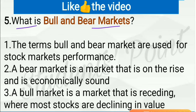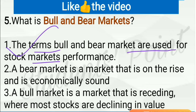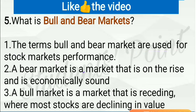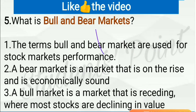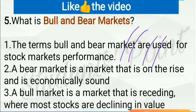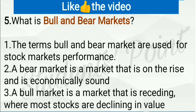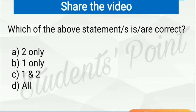What are bull and bear markets? The terms bull and bear market are used for stock market performance — this is correct. A bear market is actually a market which is receding, meaning it is going down or slowing down where values of stocks are decreasing, not increasing. You can remember by a trick: a bull has a horn, and horns are always upward, so prices in a bull market go up. In a bear market, prices go down. So only the first statement is correct and B is the right answer.